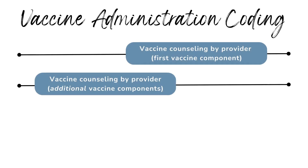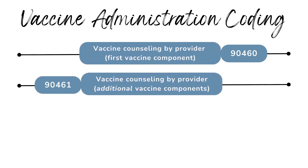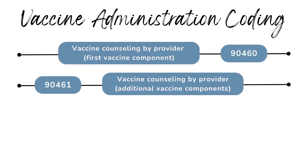When it comes to vaccine administration coding, there are two separate codes depending on the components of the vaccine. When vaccine counseling is given by the provider, the codes are 90460 and 90461. The second code is used when the vaccine given involves more than one component.